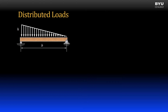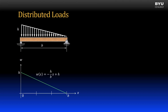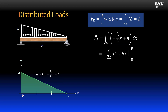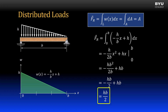Let's now look at a more general way to find the resultant force and centroid for a distributed load. Here's a beam with a linearly distributed load of height h and length b. We can represent this load as a linear equation in terms of x, where the x-axis originates at the left end of the load and points to the right. The resultant force equals the area under the load curve — in other words, the integral of the load over its length. Integrating the linear load equation over its full length and simplifying gives a resultant force equal to h times b over 2, which is the area of a triangle.